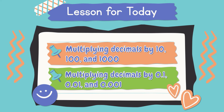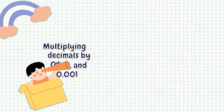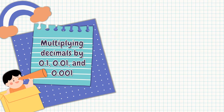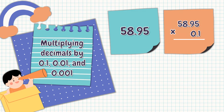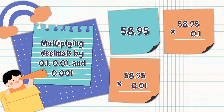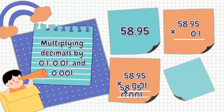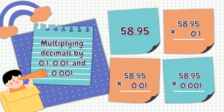Multiplying decimals by 10, 100, and 1,000 is quite easy, right? So this time, let's talk about multiplying decimals by one-tenth, one-hundredth, and one-thousandth. We are going to use the same number, 58 and 95 hundredths. Let's go!